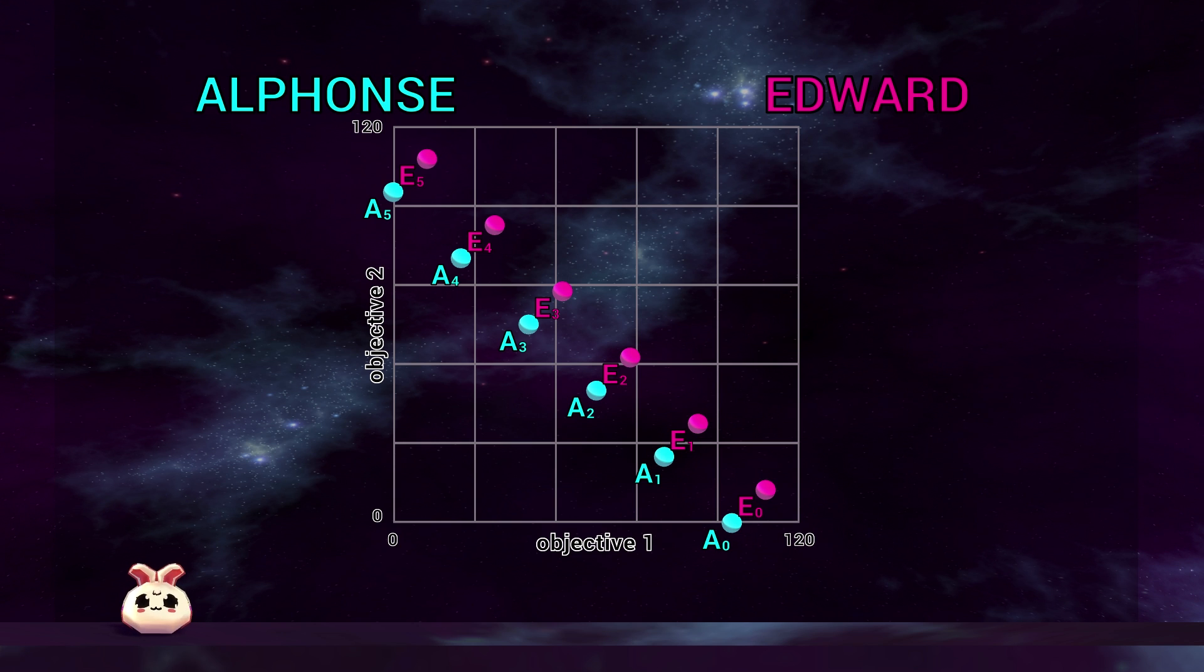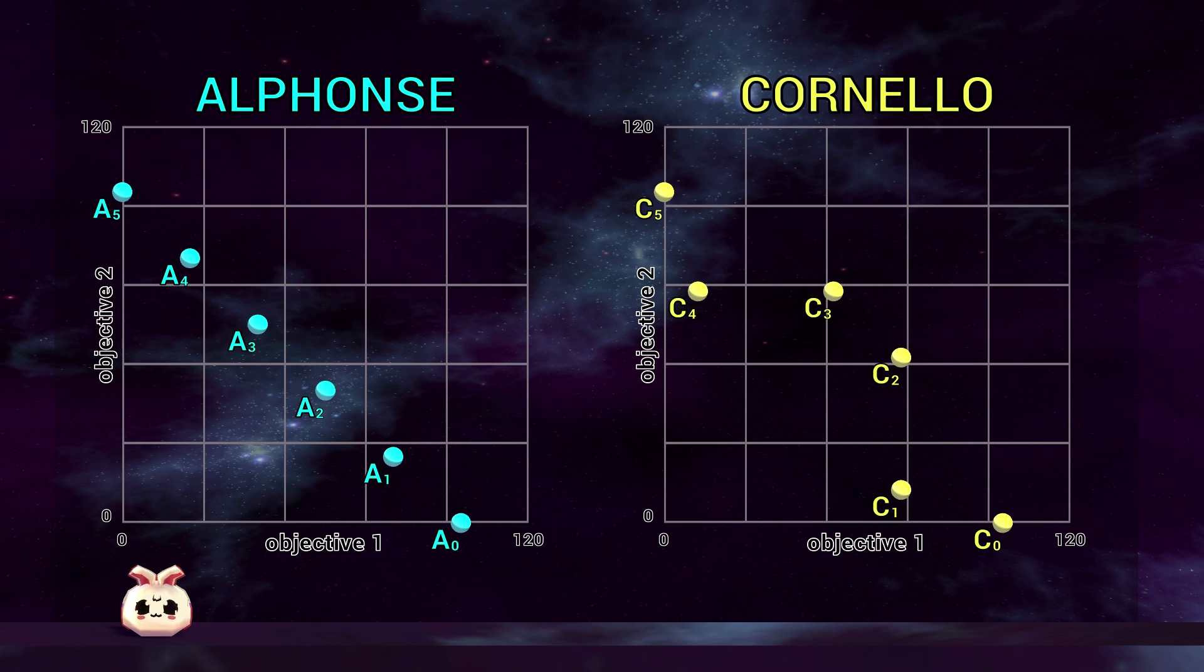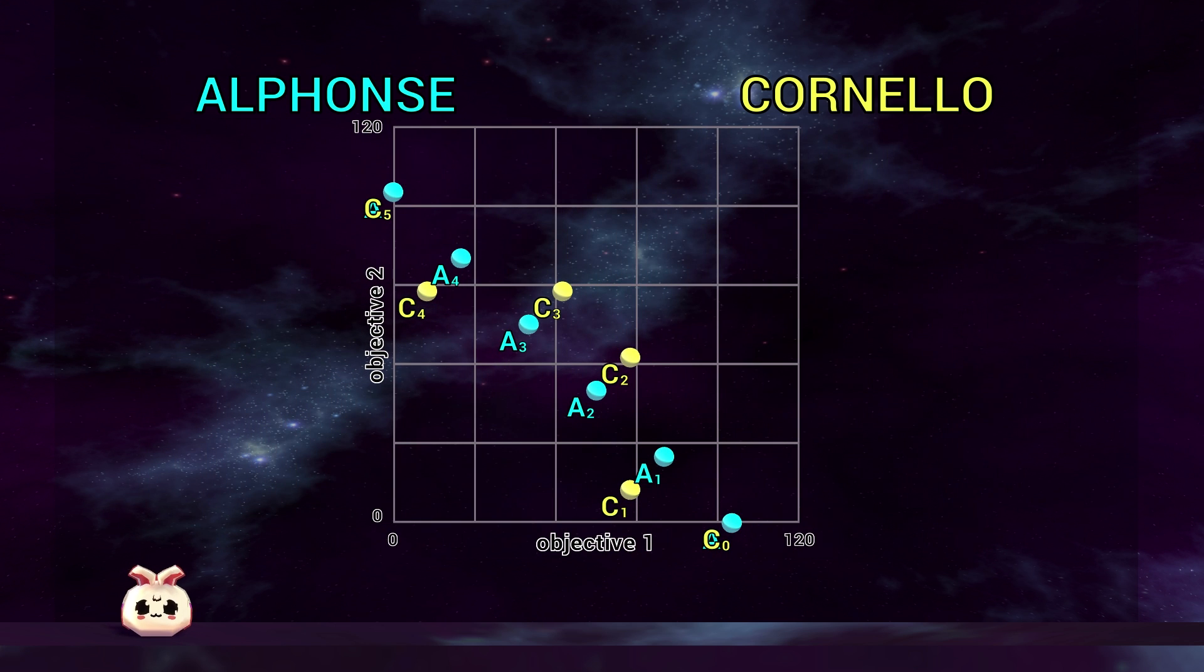This was simple enough, but let's have a look at an algorithm called Cornello. When comparing Cornello to Alphonse, it's difficult to tell which set of solutions is better. It certainly isn't as easy as it was when comparing to Edward. Let's have a closer look. When you lay them on top of each other, it's clear that some solutions produced by algorithm Alphonse are better than those of algorithm Cornello, but then some solutions produced by algorithm Cornello are better than those of algorithm Alphonse.